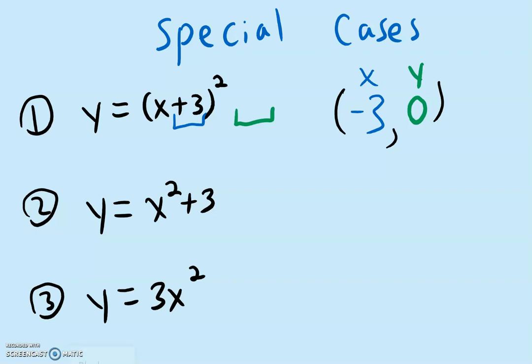For the second example, you can see that inside here, we do not have any number that is being added or subtracted to the x. So comparing with example 1, the x coordinate is what is missing, so we put a 0. Now for the y coordinate, we do have this positive 3 on the outside. And so for the y coordinate, it's going to be 3, because remember, the y coordinate sign does not change.